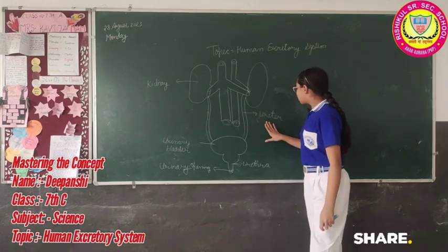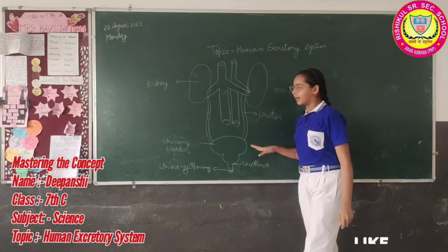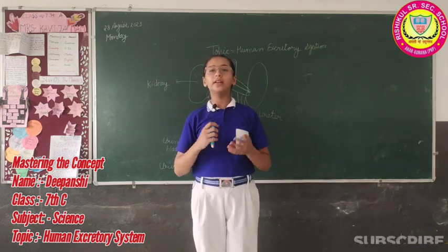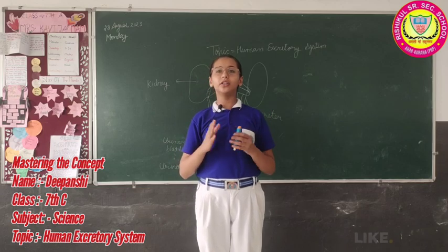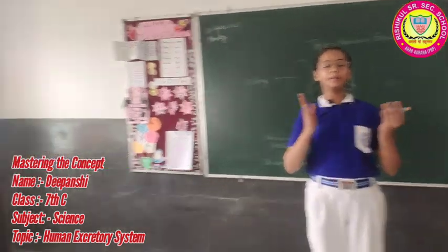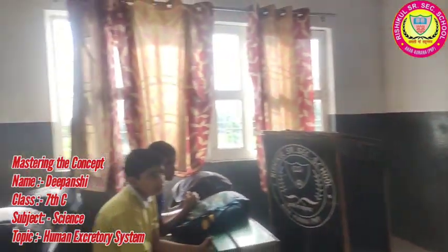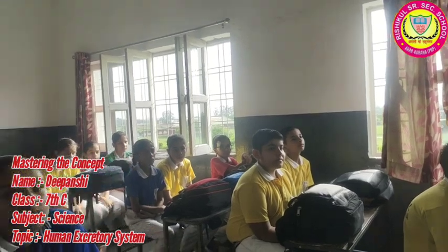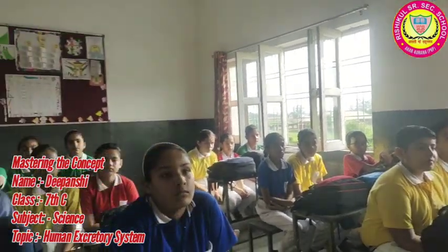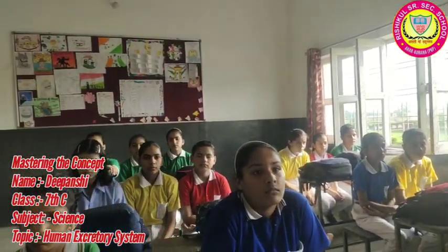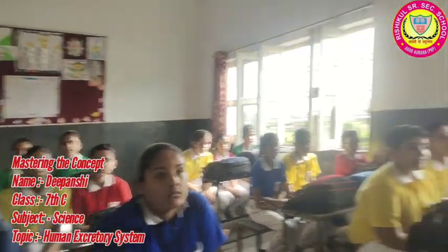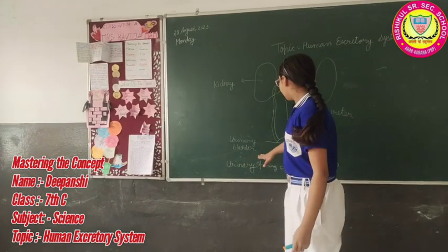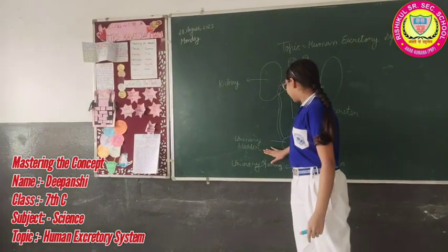Now I discuss about what is the ureter. The urine formed in the kidneys goes into the bladder through tubes called ureters. Now, what is the urinary bladder? Urine stored in the bladder is called the urinary bladder.